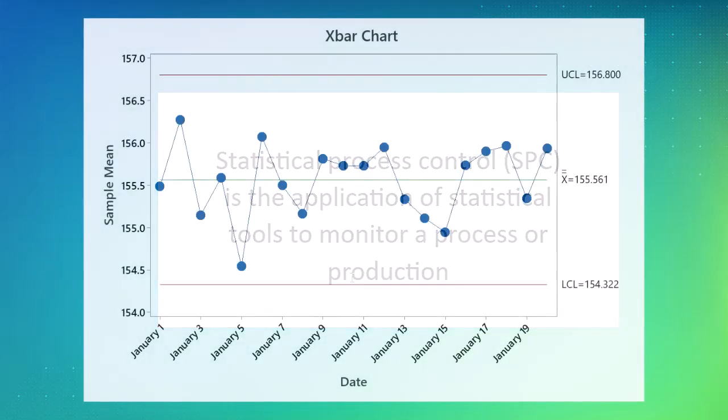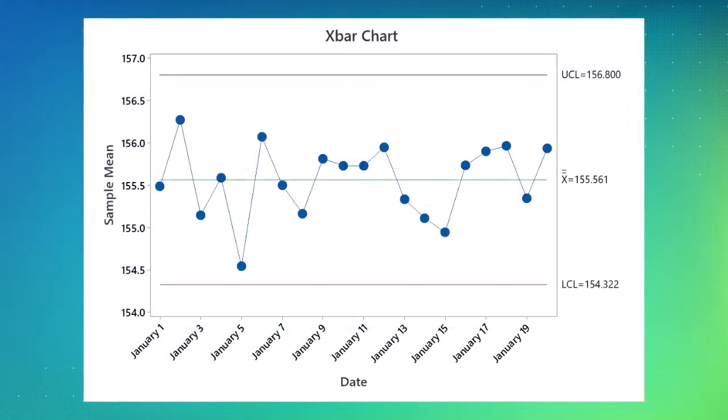The most popular SPC tool is a control chart. Control charts indicate when a process is out of control and help you identify the presence of special cause variation. When special cause variation is present, your process is not stable and corrective action is necessary.